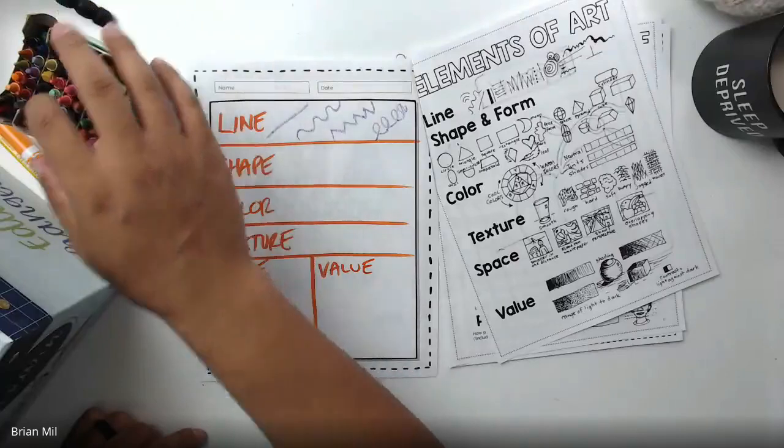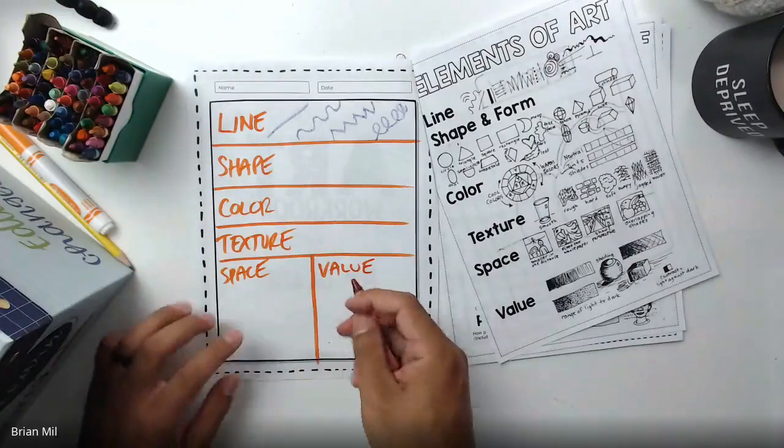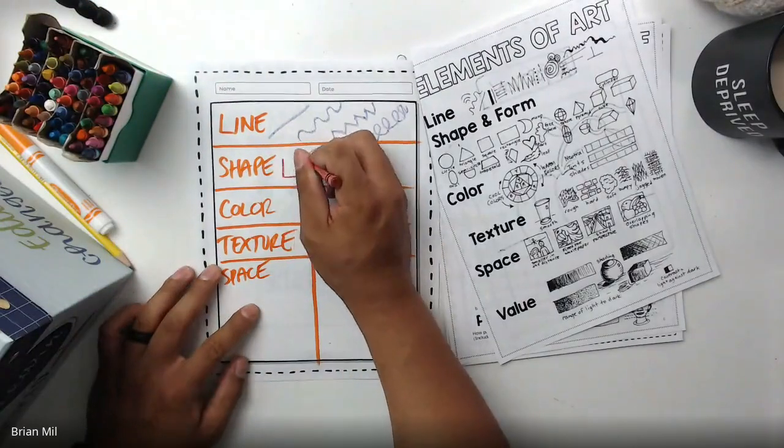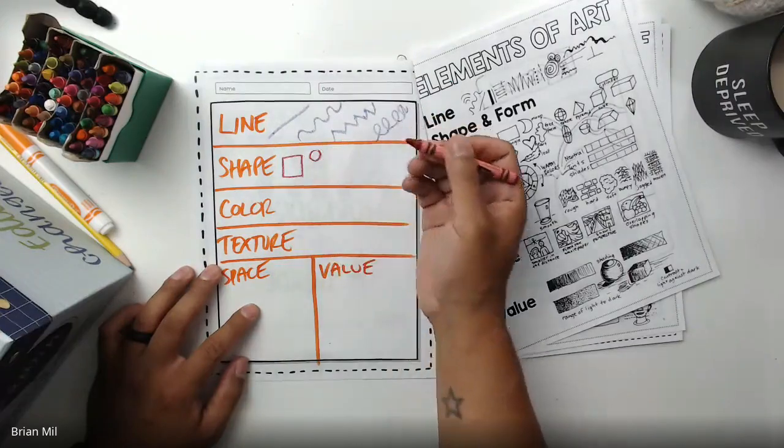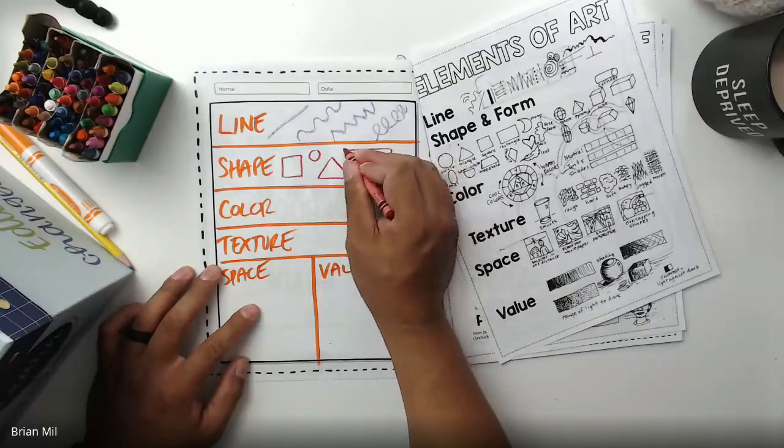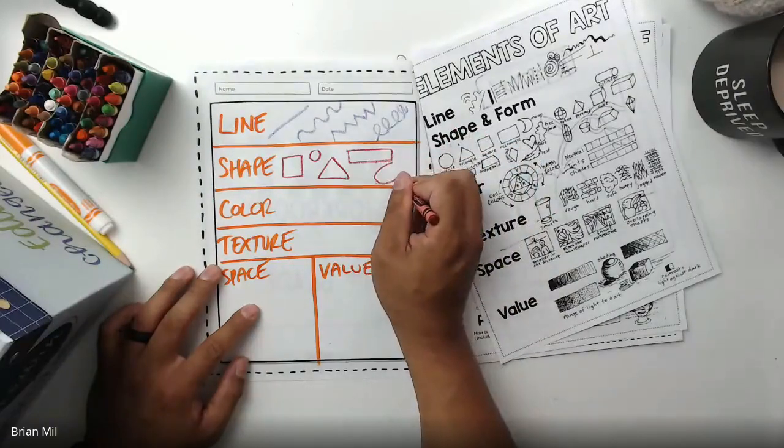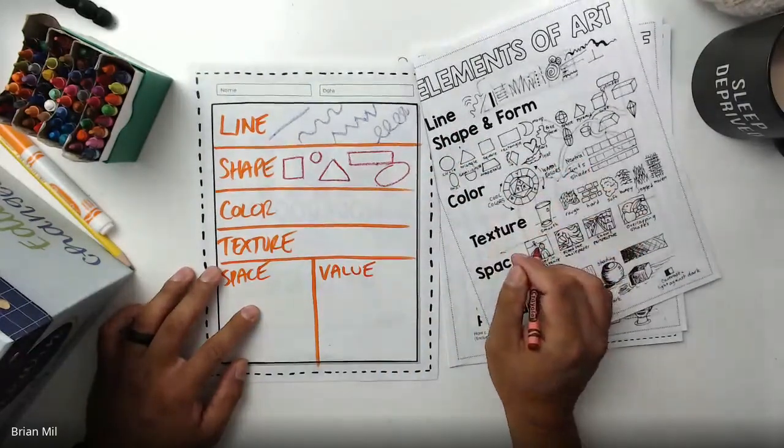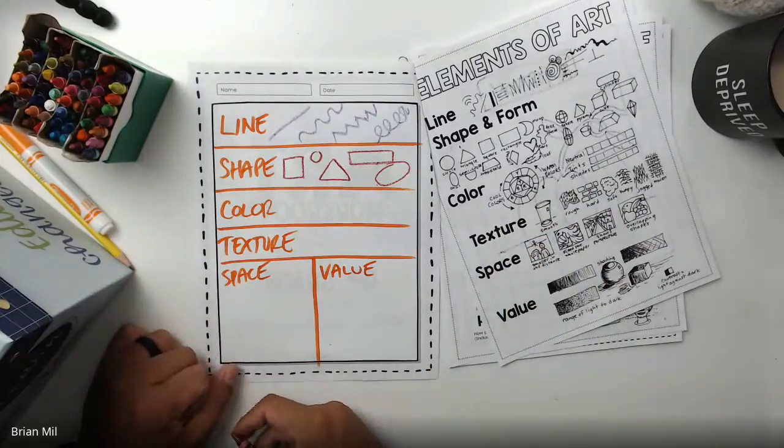Shapes. You guys know different types of shapes. I'm just going to go over it real quick. Shapes can include square, circle, triangles, rectangles, ovals, stuff like that. See? Super easy worksheet. All right.